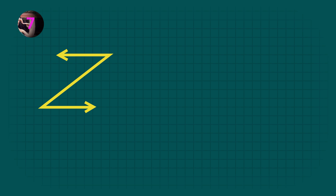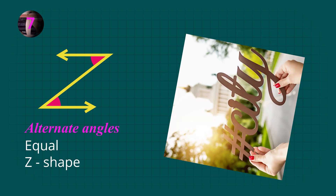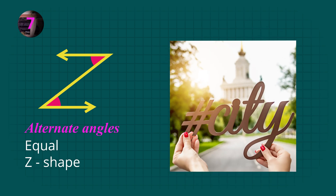In this Z shape, the angles zigzag or alternate. They're called alternate angles, and they're the same size. See that these angles in the hashtag example are equal.